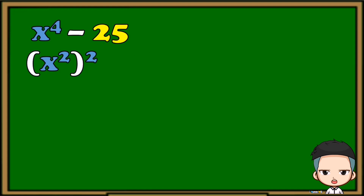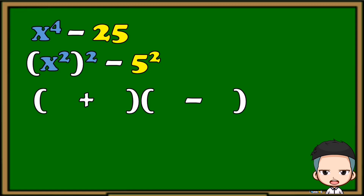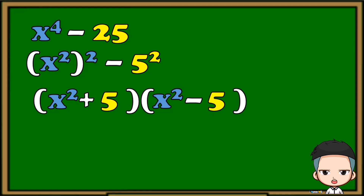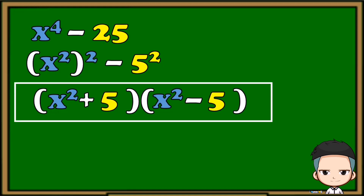x raised to the 4th is equivalent to x squared, raised to the 2nd power, and 25 is equivalent to 5 squared. Make sure you copy the operation. Next, prepare the parentheses with operations, then copy the bases. So the factored form of x raised to the 4th minus 25 is the quantity of x squared plus 5, multiplied by the quantity of x squared minus 5.